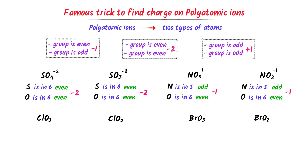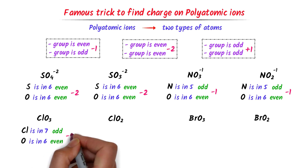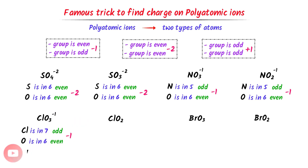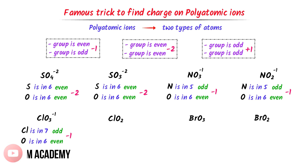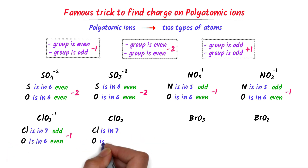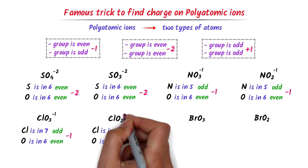In the case of chlorate ion, the group of chlorine is 7 and that of oxygen is 6. Seven is an odd number and 6 is an even number. According to the given rule, the charge must be negative 1. Hence, the charge on chlorate ion is negative 1. Similarly, chlorite ion contains the same atoms — chlorine and oxygen — so the charge on chlorite ion is also negative 1.